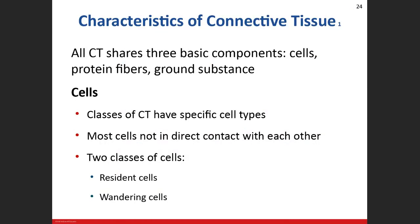Now let's get into connective tissue. There are three basic components: first, the cells of the connective tissue; second and third, the extracellular matrix (EM), which is made up of protein fibers and ground substance. So the three components are cells, protein fibers, and ground substance. Protein fibers and ground substance together make up the extracellular matrix.